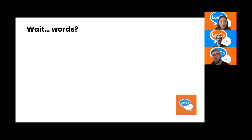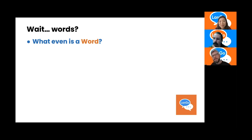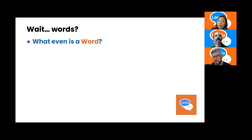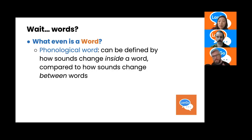We talked about using morphemes to build words, but I skipped a level and never told you what a word was. As a listener and speaker of a language, you have an intuition about what a word is, but it is a bit of a slippery concept. In linguistics, there are two basic ways to define the word. The first way is through phonological definition — we'll call it the phonological word.